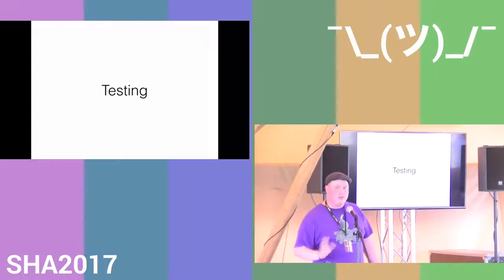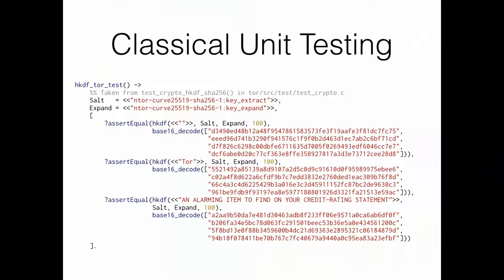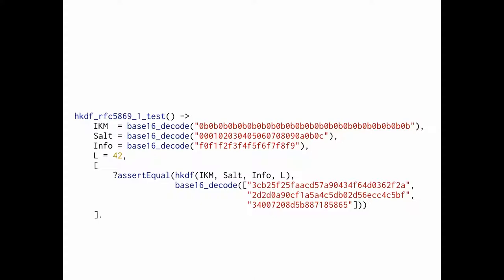For testing, we have classical unit testing, and the Tor source code itself comes with a lot of tests — which is very nice because you can copy out some test vectors, play around with them, and make sure your code works. This is generally taken from the C Tor implementation. For standardized components, we also add test vectors from the RFCs to build up trust in the code.